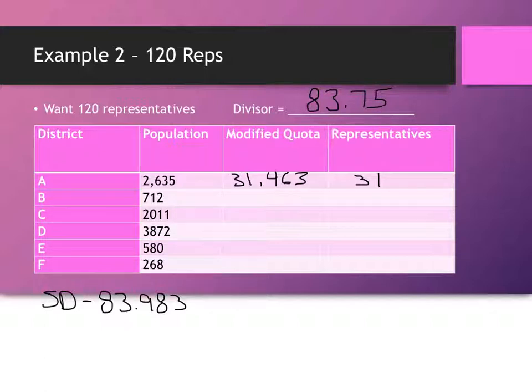And then this becomes 8.502, 24.012, 46.233. So, what I'm saying is you have to be pretty careful about the decimal points in Webster's method. 9.25, 6.925, and 3.2.